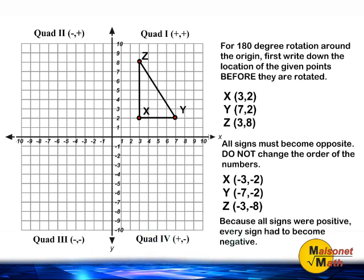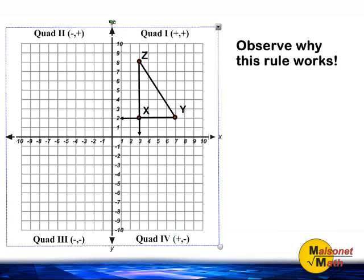Let's observe why this rule actually works. Each quarter turn is worth 90 degrees, so we have to make two 90 degree turns around the origin. And if you take a look right now, notice that point X is located at positive 3 and positive 2.